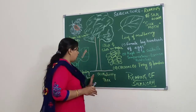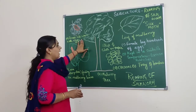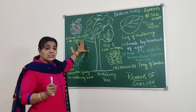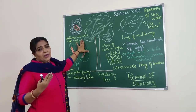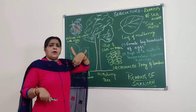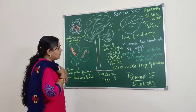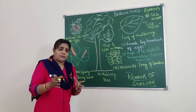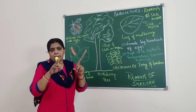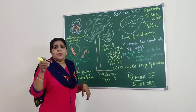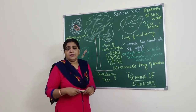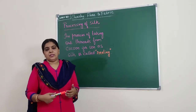So that is the rearing of silkworm. To summarize: the female silk moth lays eggs, which are sold to the farmer. The farmer keeps the eggs in hygienic conditions at a suitable temperature. The larvae hatch out, feed on mulberry leaves day and night, grow to a larger size, are kept in a bamboo tray with twigs, attach themselves, and build the cocoons.